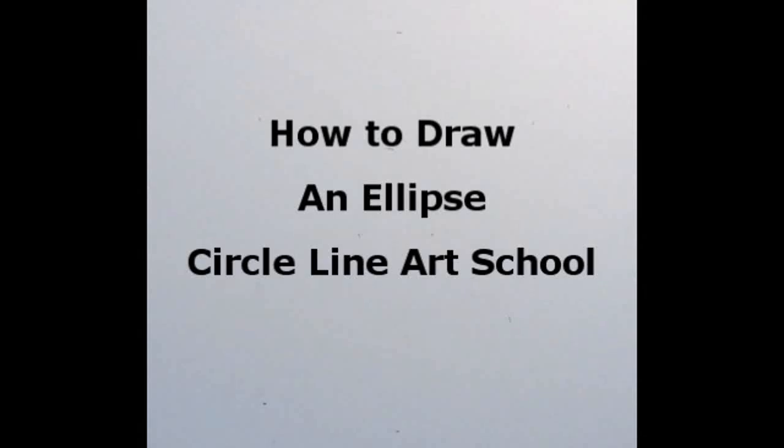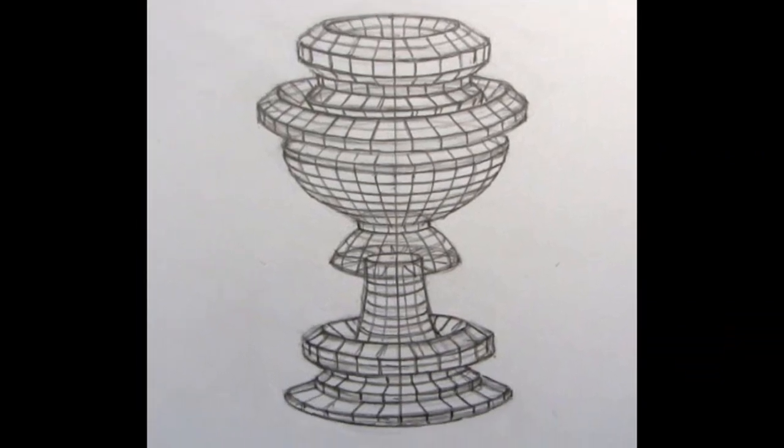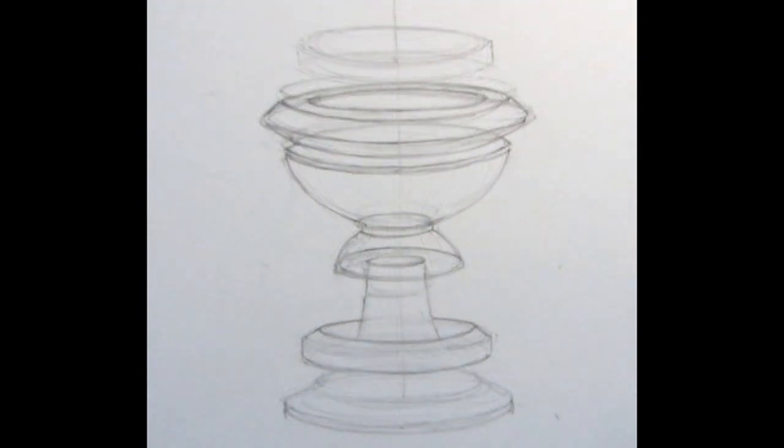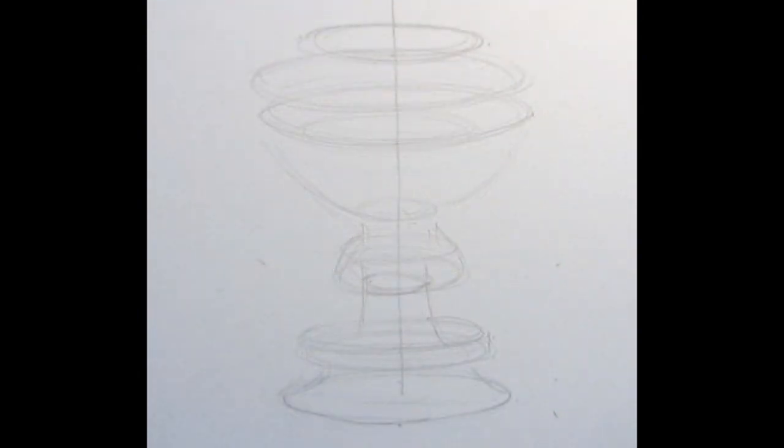Hello and welcome to my new video: how to draw an ellipse. This drawing is based on a famous drawing by the 15th century Italian artist Paolo Uccello. Uccello is one of the pioneers of visual perspective, a way of depicting three-dimensional space on a two-dimensional surface.